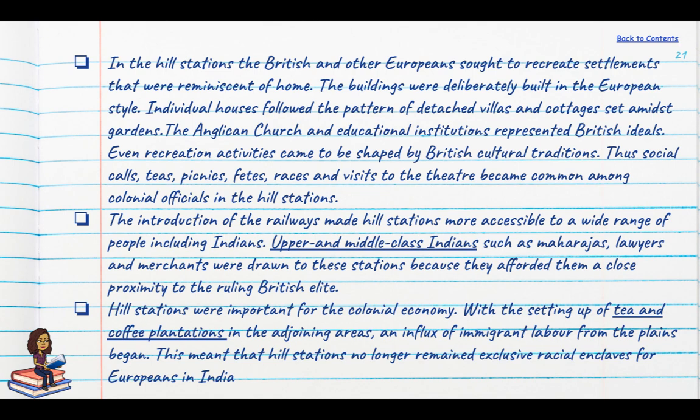The introduction of railways made hill stations more accessible, including to Indians. Upper and middle class Indians such as Maharajas, lawyers and merchants were drawn to these stations for their close proximity to the ruling British elite. Hill stations were also important for the colonial economy — the setting up of tea and coffee plantations saw an influx of migrant labour from the plains, meaning hill stations were no longer exclusively racial enclaves for Europeans.